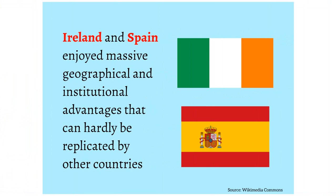There are two countries in Europe that have moved from middle income status up to rich country status: Ireland and Spain. But they had geographical advantages that can hardly be replicated. Ireland is, in economic structure, a suburb of London — one of the richest places on earth. Ireland also benefited from massive European Union structural adjustment funds. European infrastructure building in Spain was even greater. Both of these countries, at some points in their recent history, had European structural adjustment funds accounting for 3–4% of GDP — a kind of subsidy not available to other middle income countries.